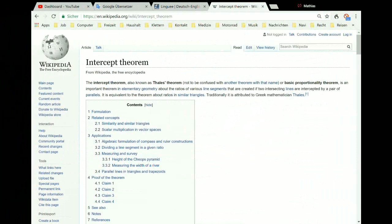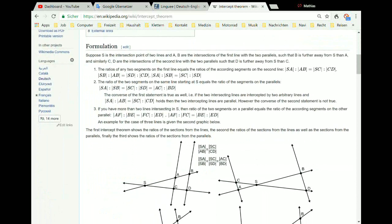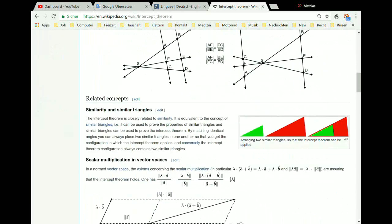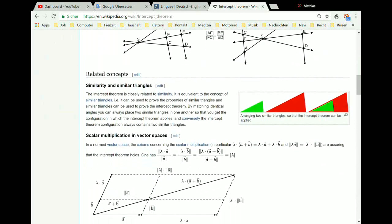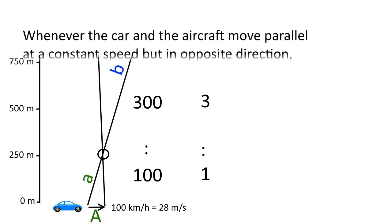Those who are good at math will still remember the intercept theorem. Lines passing through a point always intersect two parallel lines in the same ratio, or vice versa. If two parallel lines are cut in the same ratio, the lines always go through one point. From the intercept theorem also follows that the fixed point divides the line between the car and plane in the same ratio as the two speeds. I summarize this now.